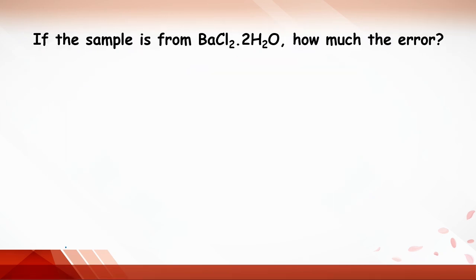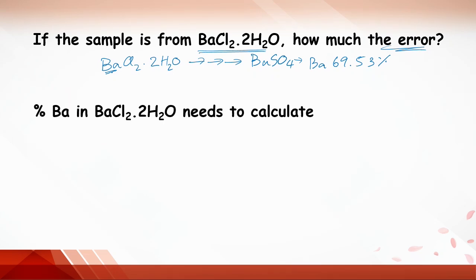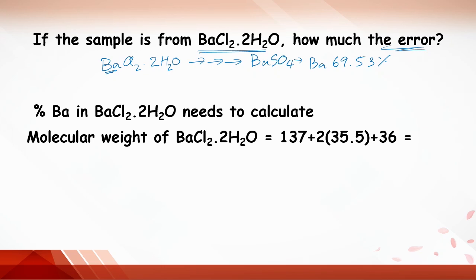The question is, if the sample is from barium chloride dihydrate, how much is the error? What does it mean with this question? It means that we have an unknown sample which is barium chloride dihydrate, and we do the experiment by precipitation. We got barium sulfate. From the calculation of the barium sulfate, we get barium of 69.53%. What is the barium in this unknown sample? We need to calculate the percent by knowing the molecular weight of barium chloride dihydrate.